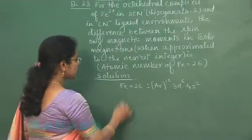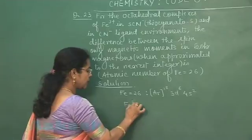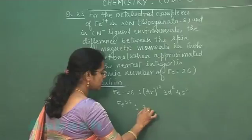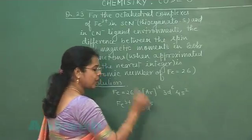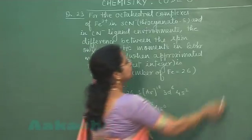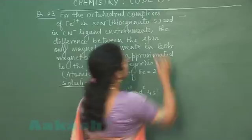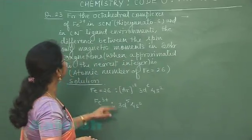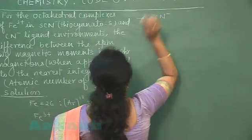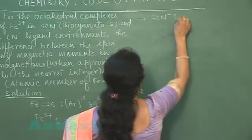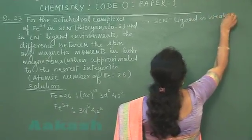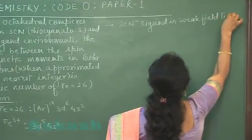In these two complexes, iron is present in Fe3 plus state. So in plus 3 state, its electronic configuration becomes 3D5, 4S0. Three electrons are removed. First complex is the complex of Fe3 positive ion with thiocyanate. This thiocyanate ligand is a weak field ligand.